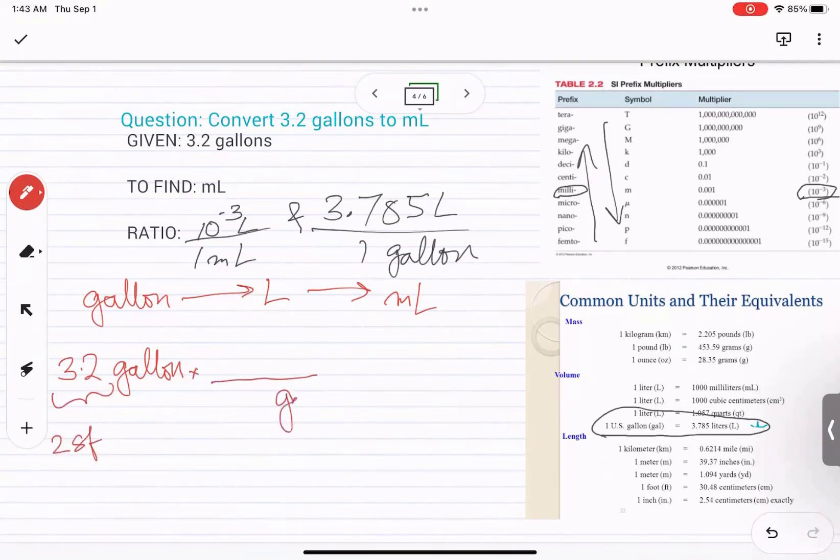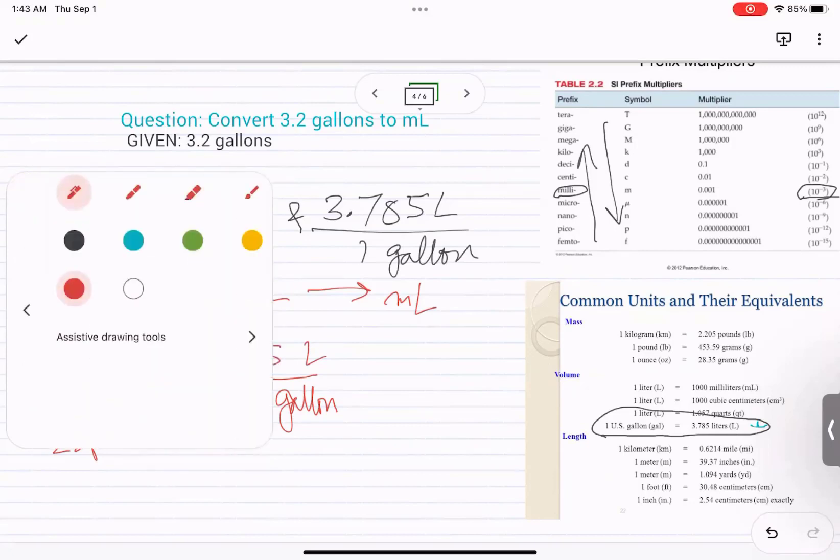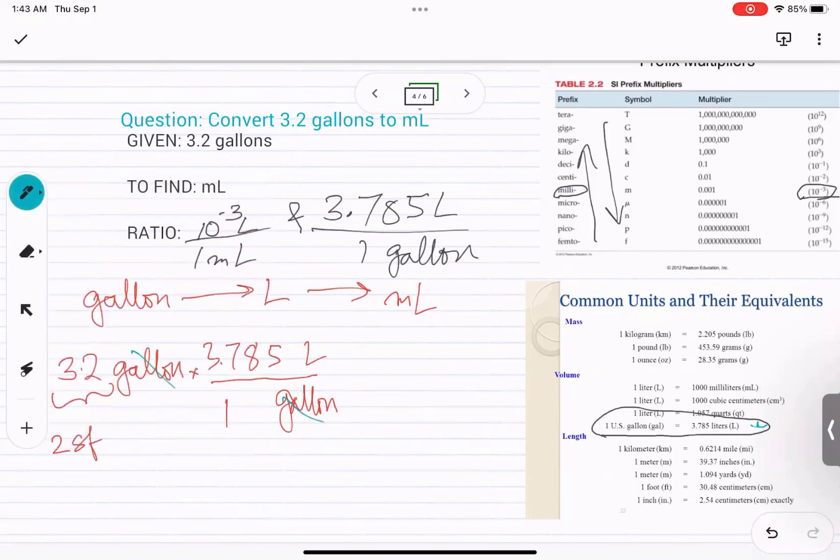So we want gallons on the bottom and liter on the top. So we have one gallon and 3.785 liters. We will see that the gallon and gallon cancels up. We are just left with liter. Now we want to get rid of the liter and end up with just milliliter.